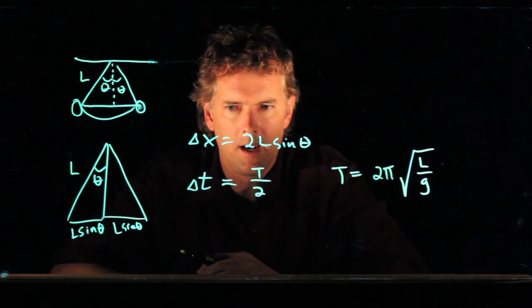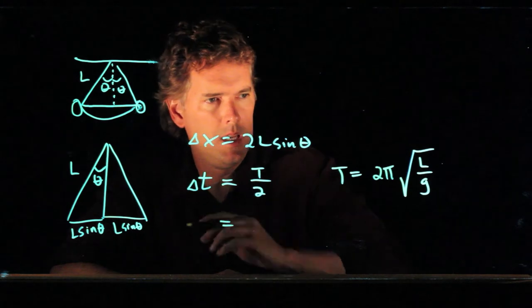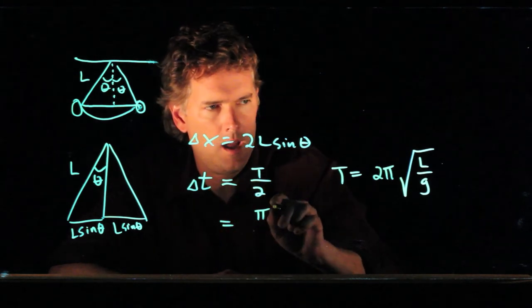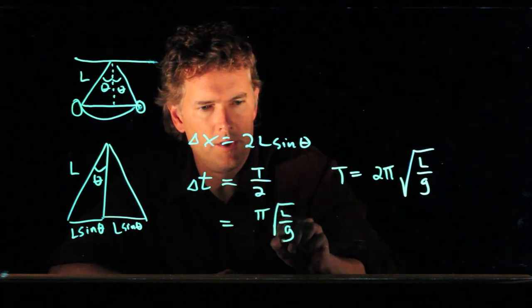Alright. What do we get now? We get delta t equals T over 2. So that's pi times square root L over G.